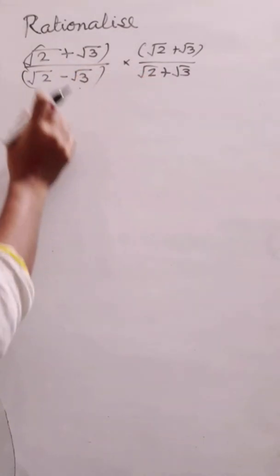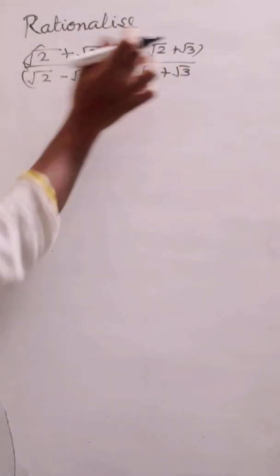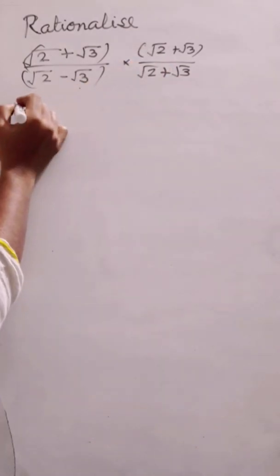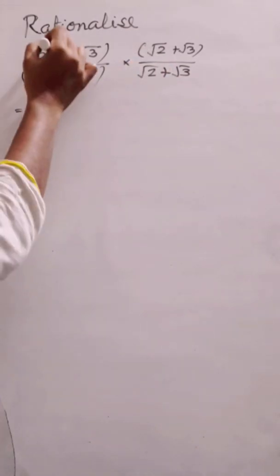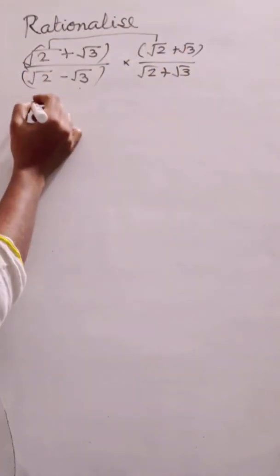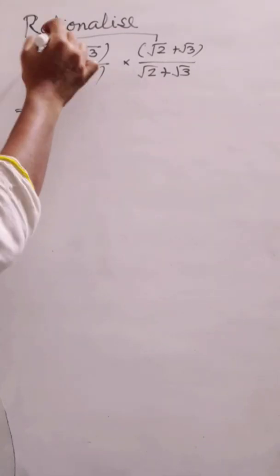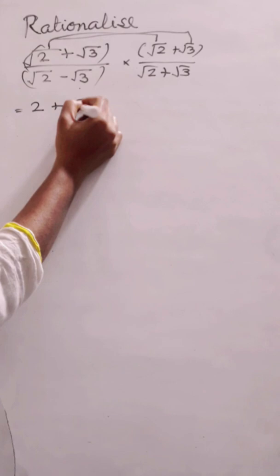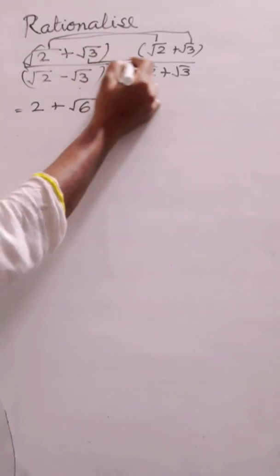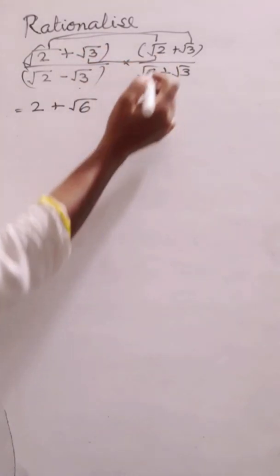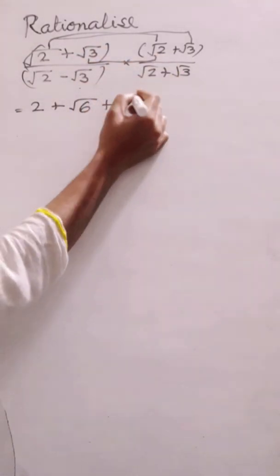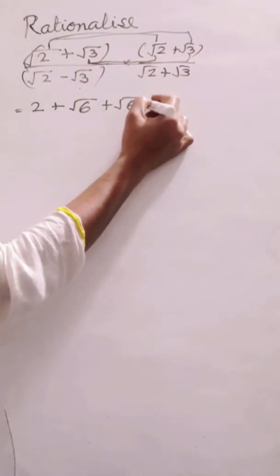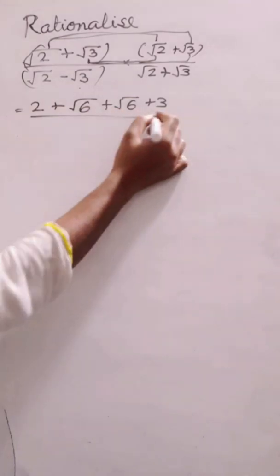Now I will multiply this into this. Root 2 multiplied with root 2 will give you 2, plus root 2 multiplied with root 3 will give you root 6. Then again root 2 multiplied with root 3 will give you root 6, and root 3 multiplied with root 3 will give you 3 in the denominator.